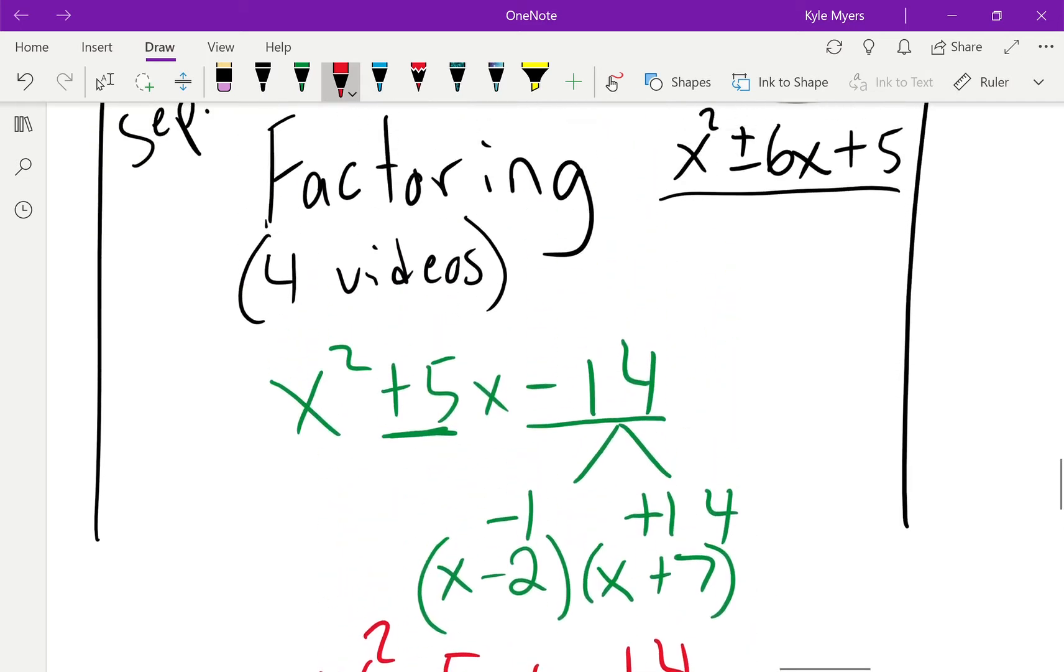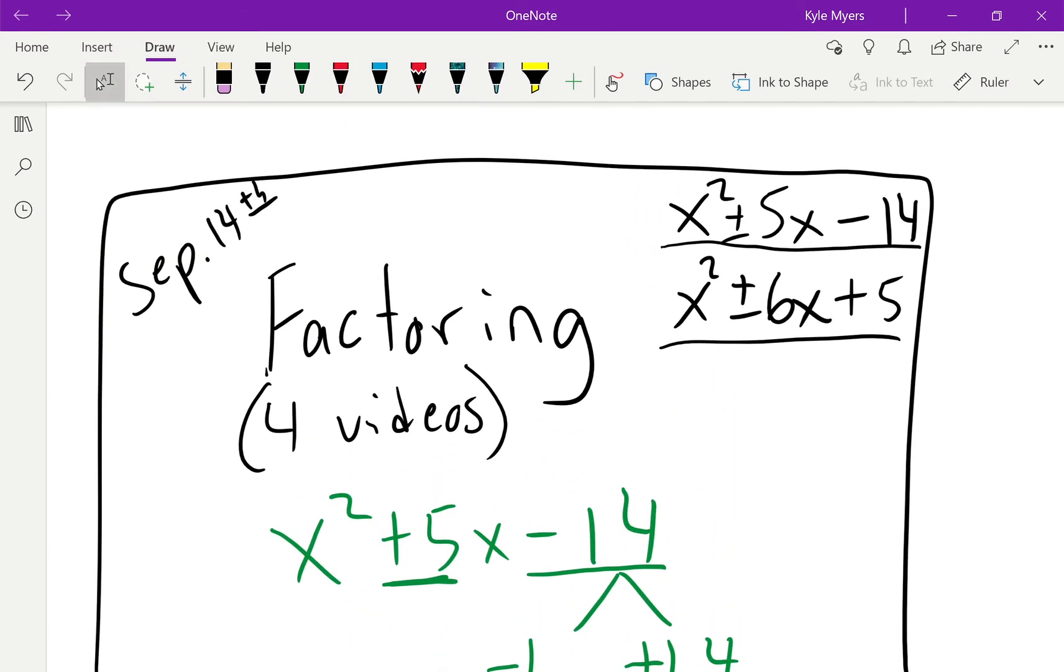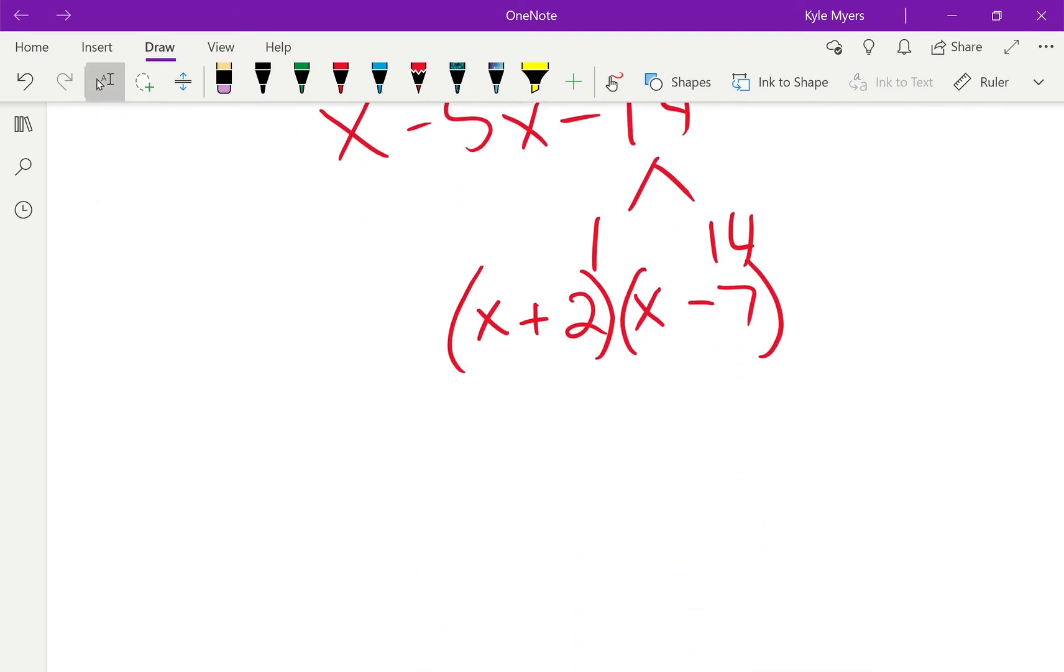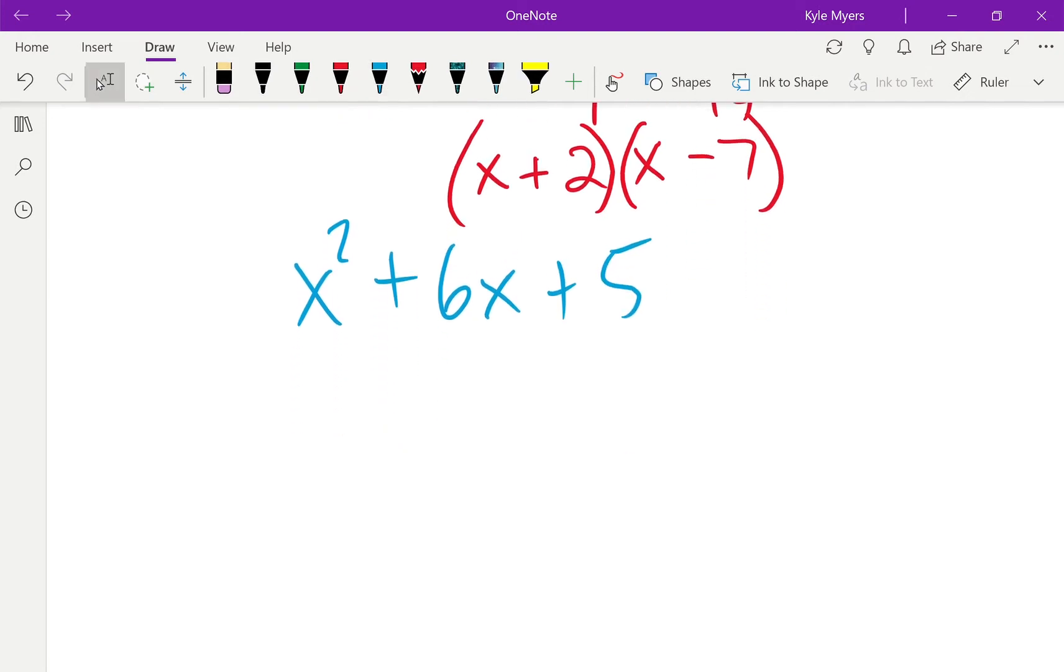Now let's look at the second half of our problems. We've got x² + 6x + 5 and x² - 6x + 5. So this time, the method is still the same each time, right? You always want to multiply two numbers to get the last number.